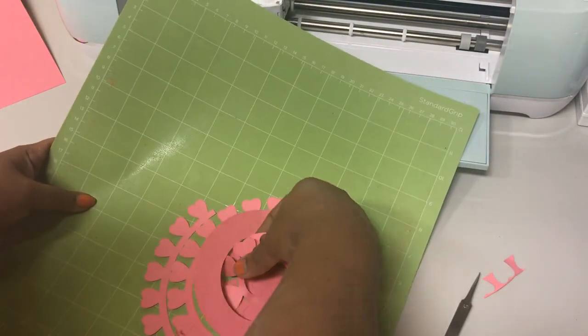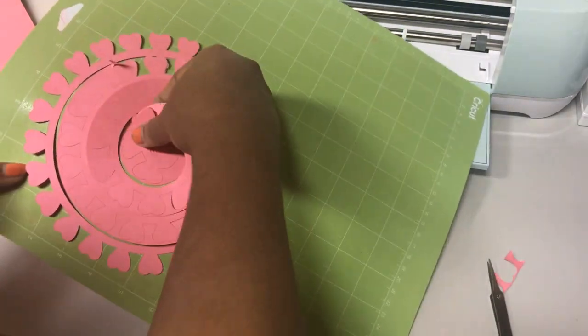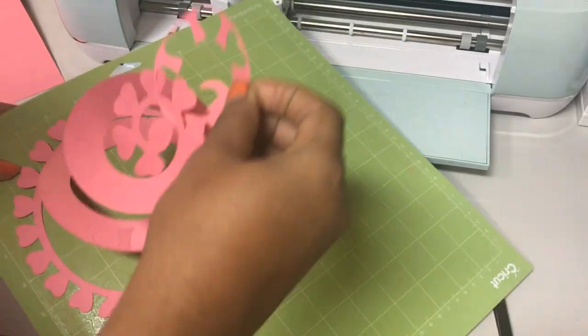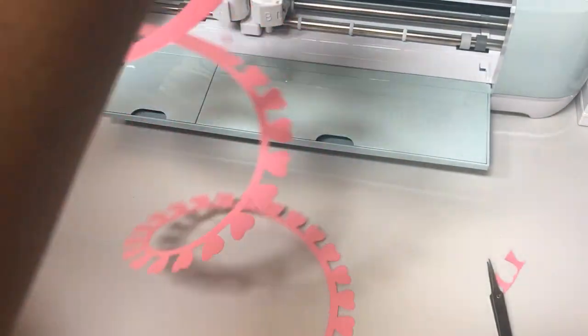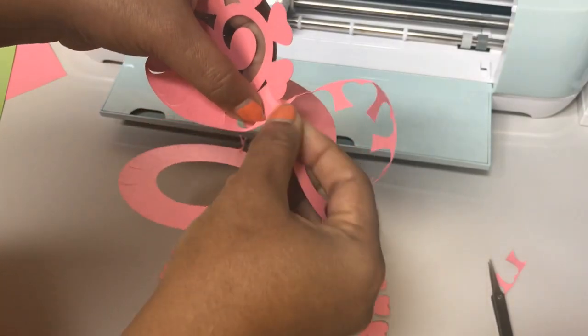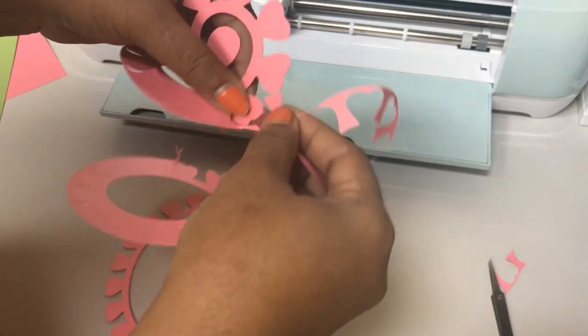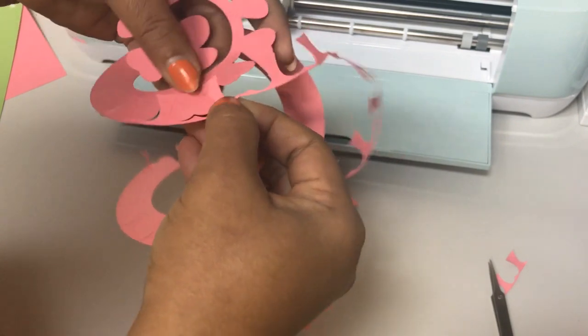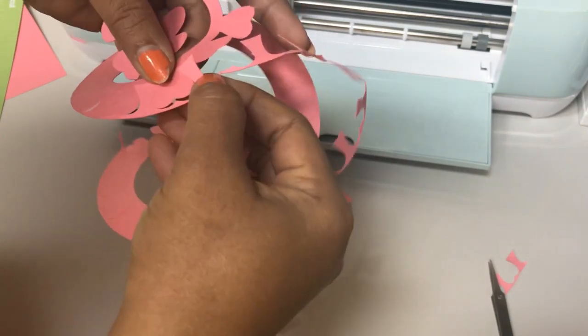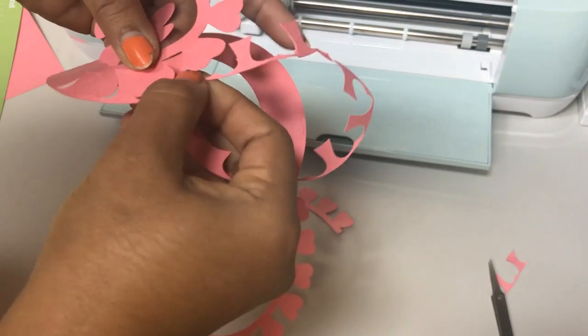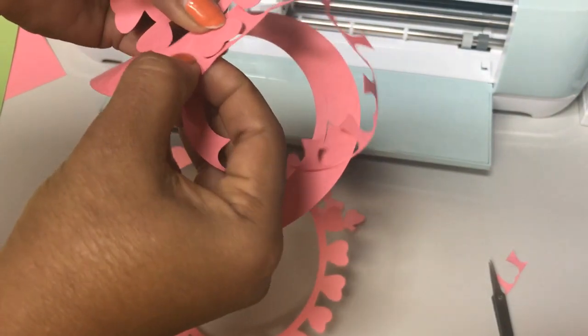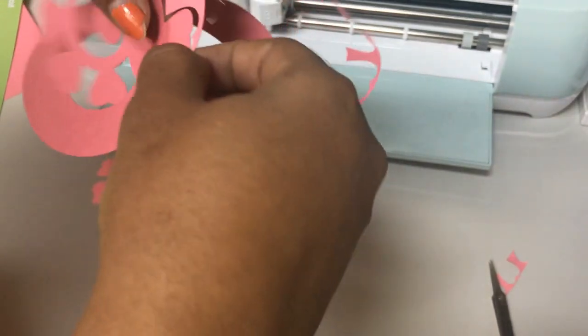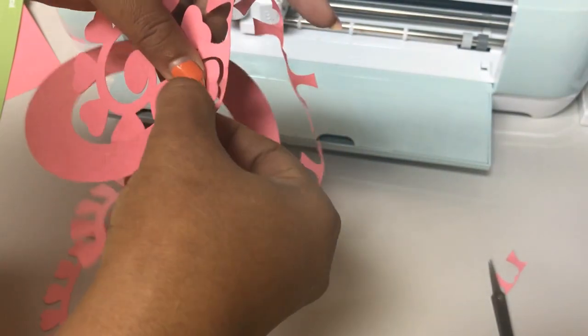So now we move our mat away because it's very sticky, then we try to remove all the unwanted pieces from our design. So if you increase the pressure then you will not have this difficulty of removing, it will come off more easily.